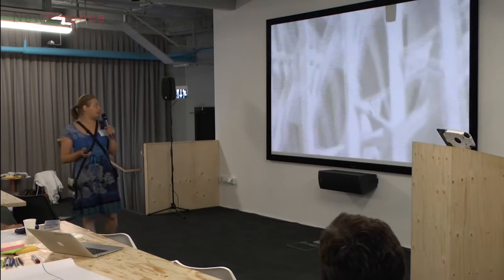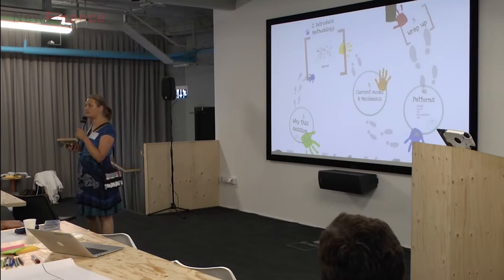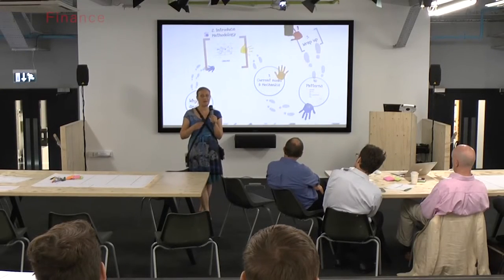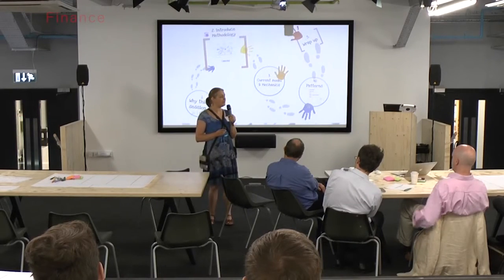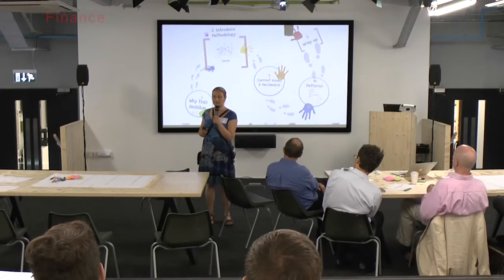But first let me tell you what the day is going to look like. We'll start with a few introductions as to how we talk about a business model, what a business model means and what are the elements that make it work. Then we will compile the current business model of the insurance industry — what does it actually look like, what are its mechanics, and we'll examine how strong these mechanics are. Where are the weak links? Where are the strong links?